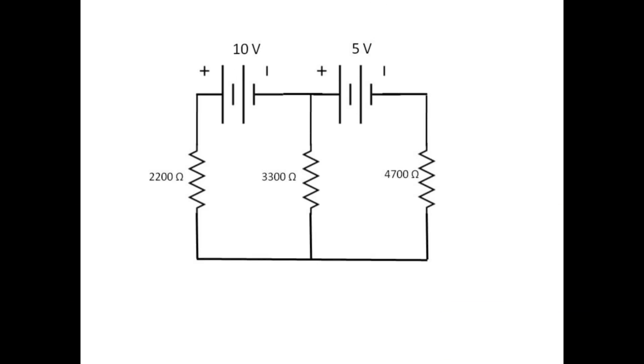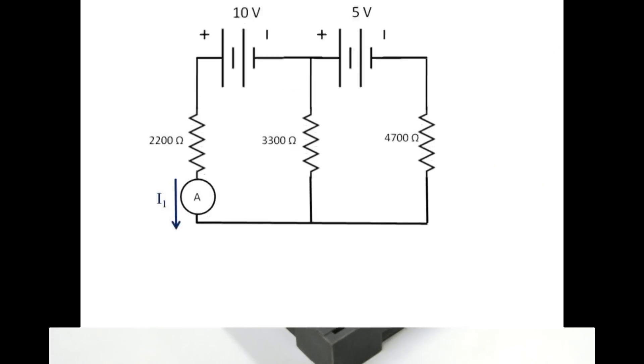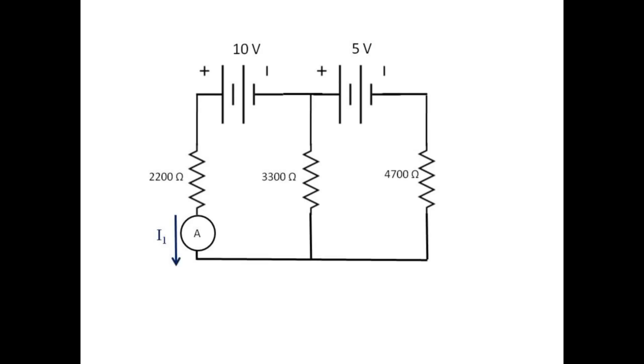The practicality of Kirchhoff's loop and node rules are that they allow us to determine currents in more complicated situations, with more than one voltage source and multiple branches. After assembling the circuit, we measure the current through each resistor in turn to get values for I1, I2, and I3.